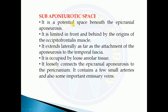The subaponeurotic space is a potential space beneath the epicranial aponeurosis. It is limited in front and behind by the origin of the occipitofrontalis muscle, and extends laterally to the attachment of the aponeurosis to the temporal fascia. It is occupied by loose areolar tissue and contains a few small arteries and some important emissary veins.